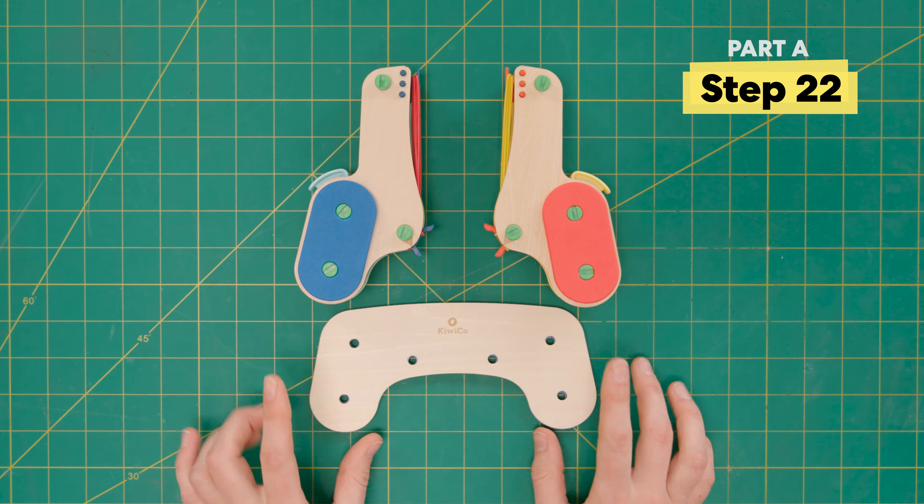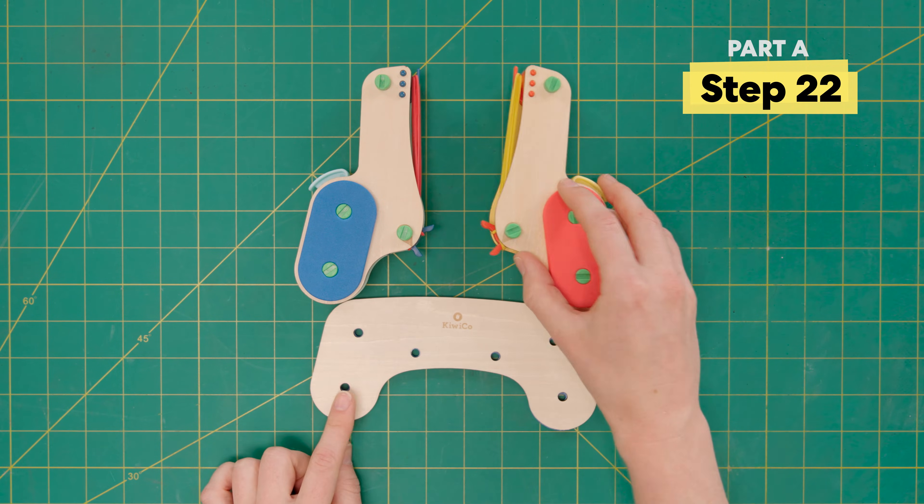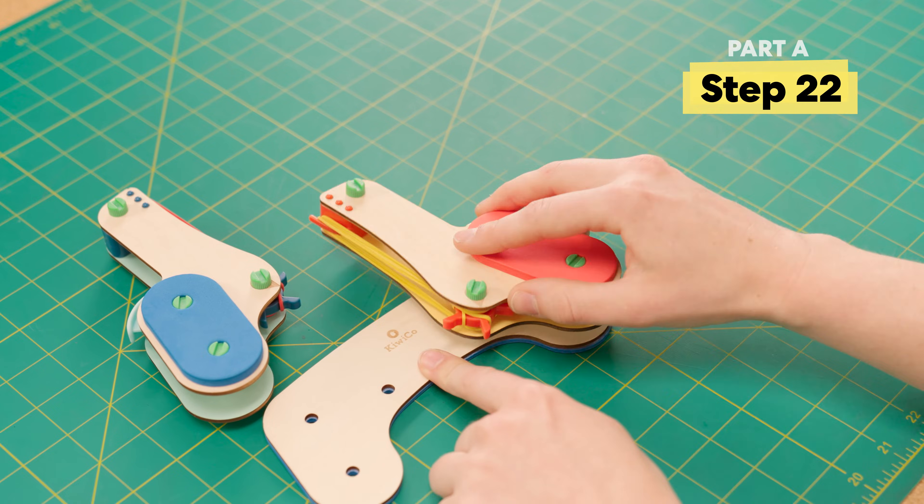To put these blasters together, you can attach it to the base. So, these blue bolts on the back side can notch into these holes.